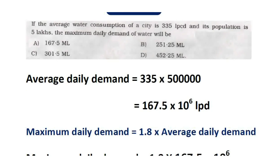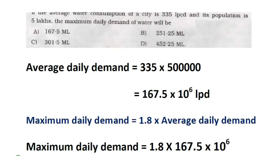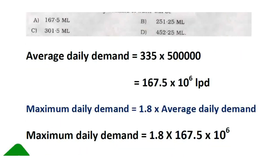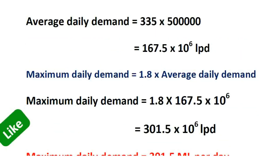The average daily demand value is 167.5 × 10⁶. If we multiply by 1.8 times the average daily demand, maximum daily demand equals 1.8 times the average daily demand.